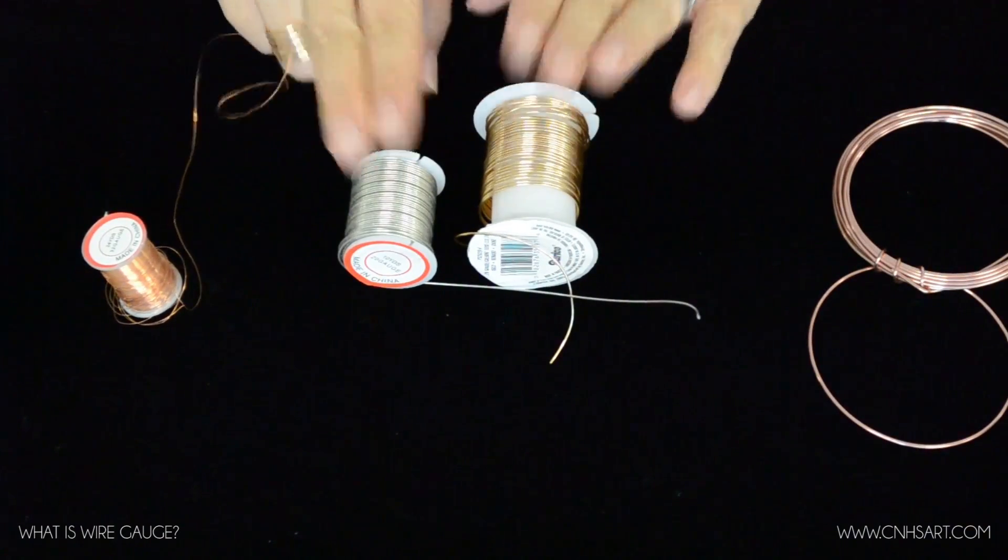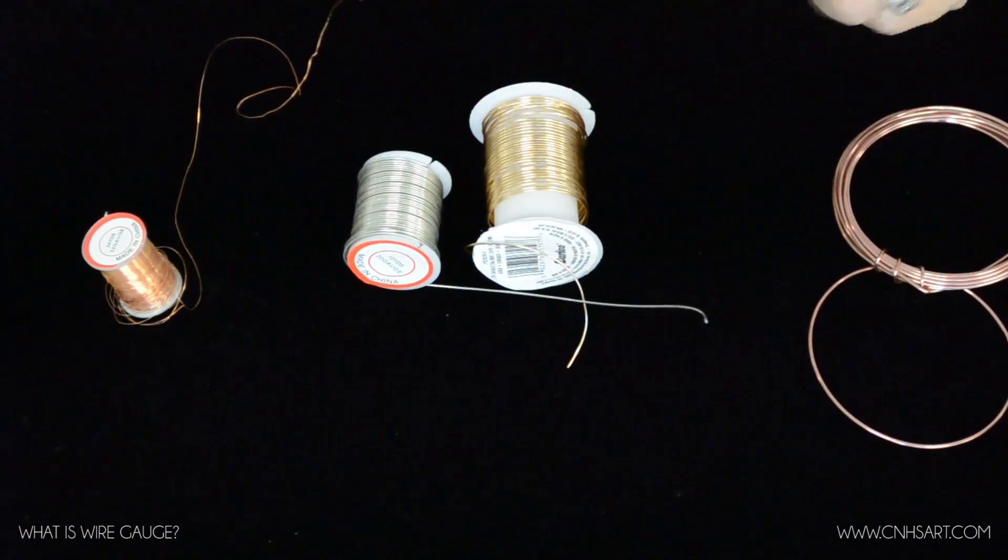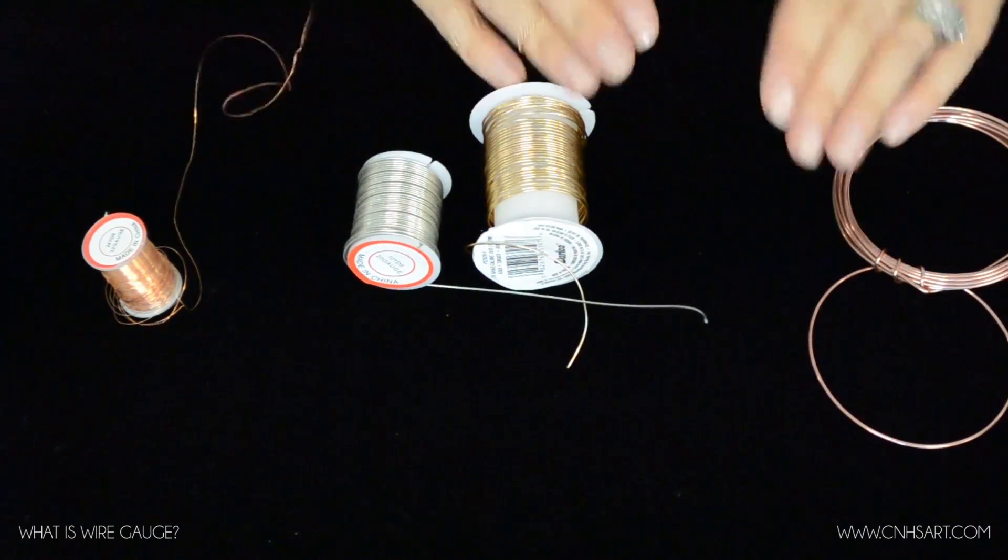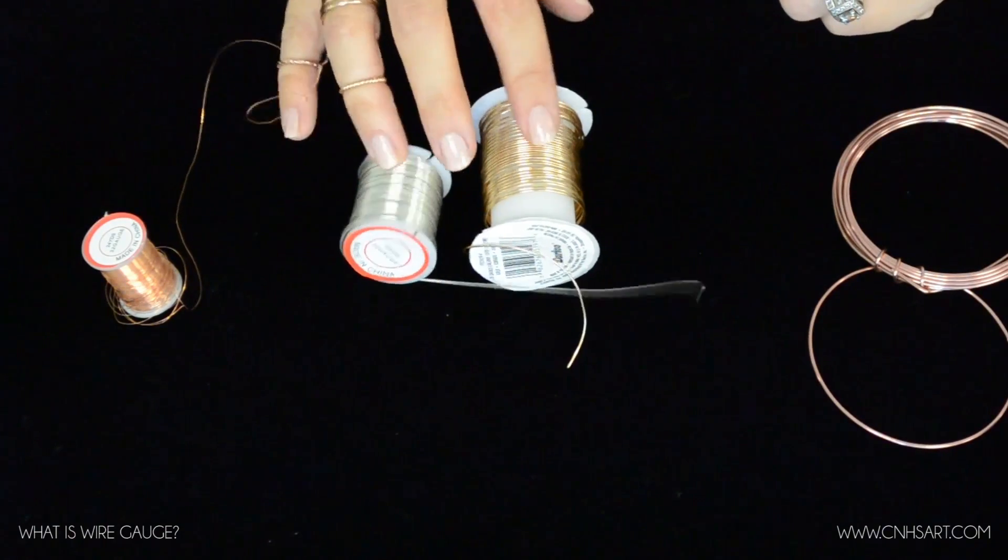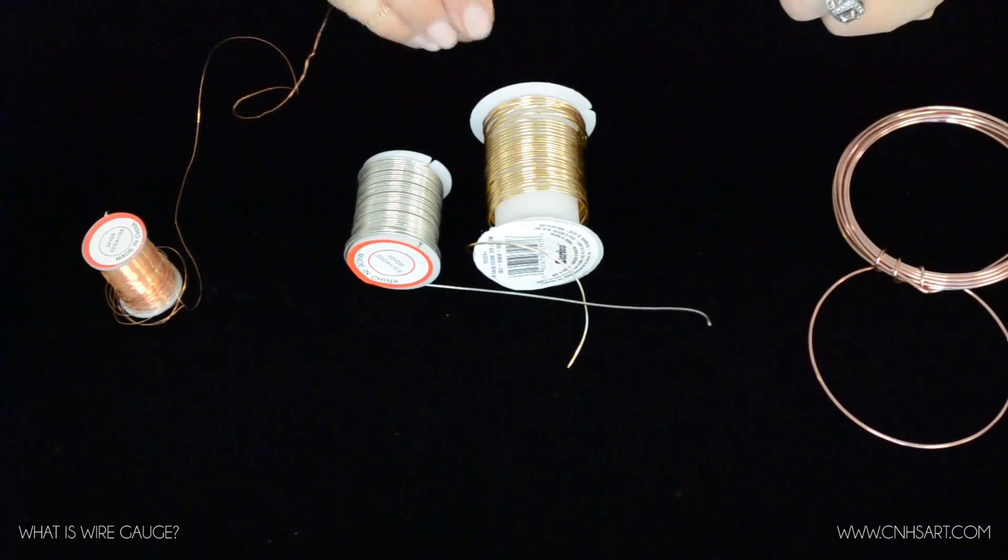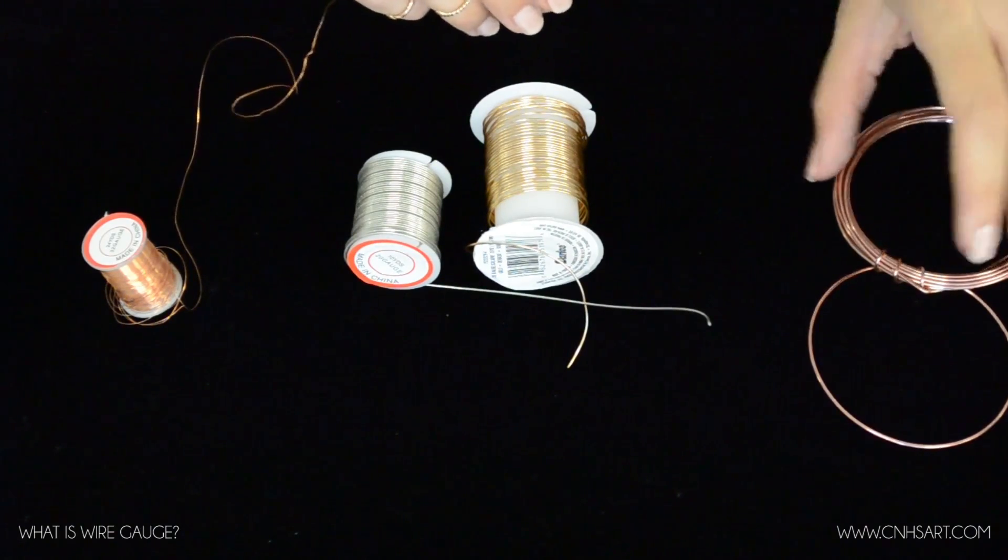The difference is going to be dependent on the project that you're doing. We primarily use 20 gauge for the majority of our projects. It tends to be the most universal when it comes to making jewelry, the jump rings, ear wires, a lot of stuff that we do. But we do occasionally need the bigger or the smaller wire. So that is wire gauges.